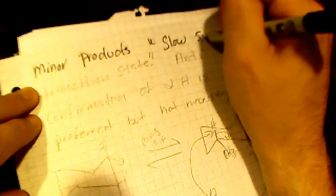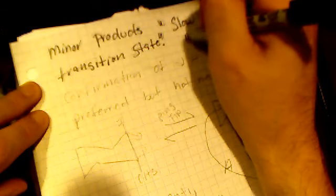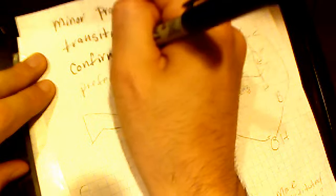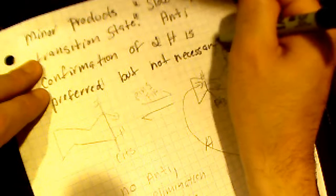All right, so then I just want to talk about the minor products. There are minor products and it's interesting to know because some minor products come through, are slow. All right, so what we need to know here is that anti-confirmation of the alpha hydrogen is preferred, but not necessary, okay? It's preferred, but that's not the way it has to be.